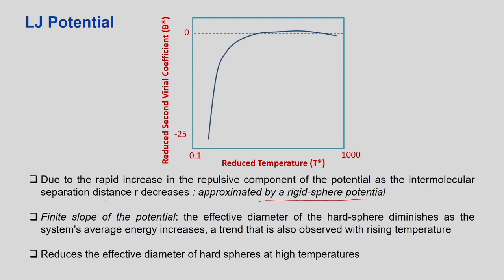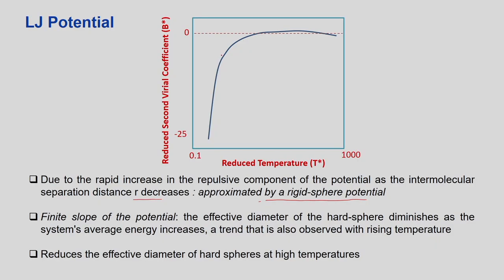As the separation R decreases, the atoms come closer together and repel each other. This repulsive interaction produces a diagram like a hard sphere potential — after a certain distance there is essentially a straight vertical line, where that distance equals half the sum of the molecular diameters of the two atoms. We can therefore approximate the LJ potential at small separation by a rigid sphere potential.